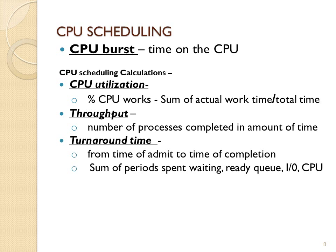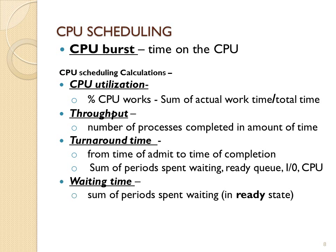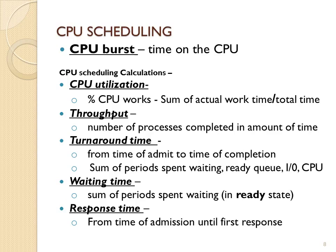The other measurements are turnaround time, waiting time, and response time. These are per-process measurements. You can measure these per process, take averages for a system average, and then compare per-process and average values across different algorithms.